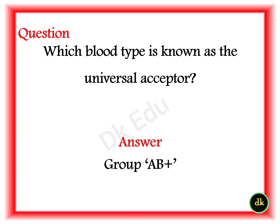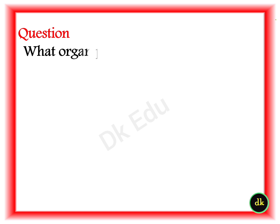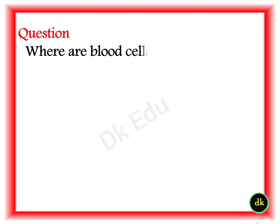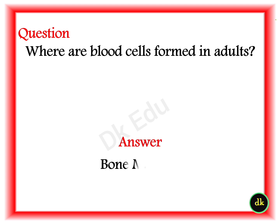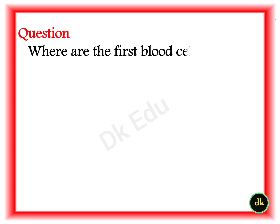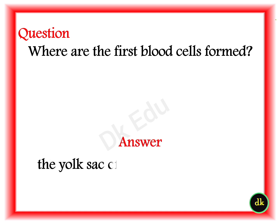Q: Which organ produces the most protein? A: The liver. Q: Where are blood cells formed in adults? A: Bone marrow. Q: Where are the first blood cells formed? A: The yolk sac of a developing embryo.